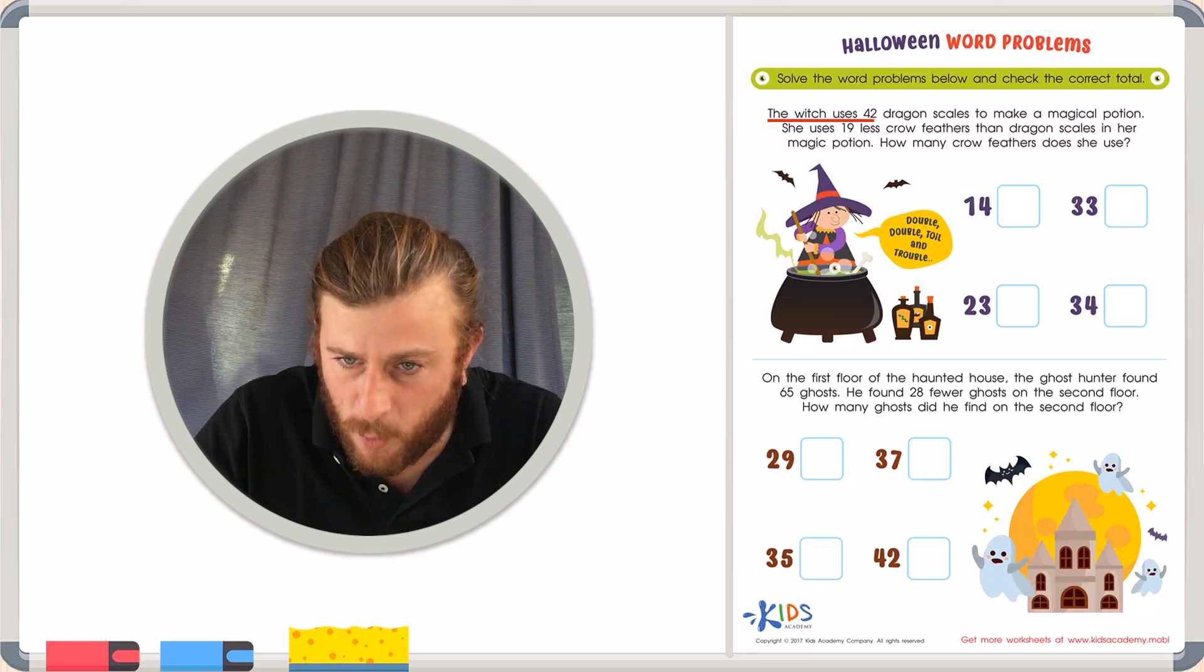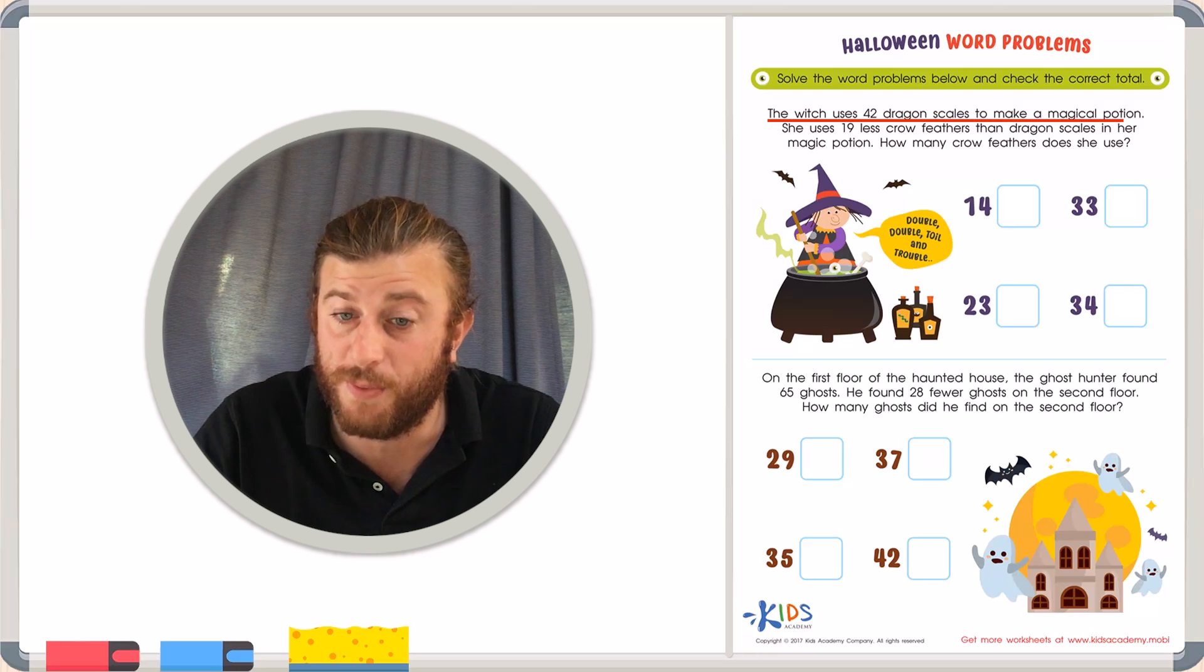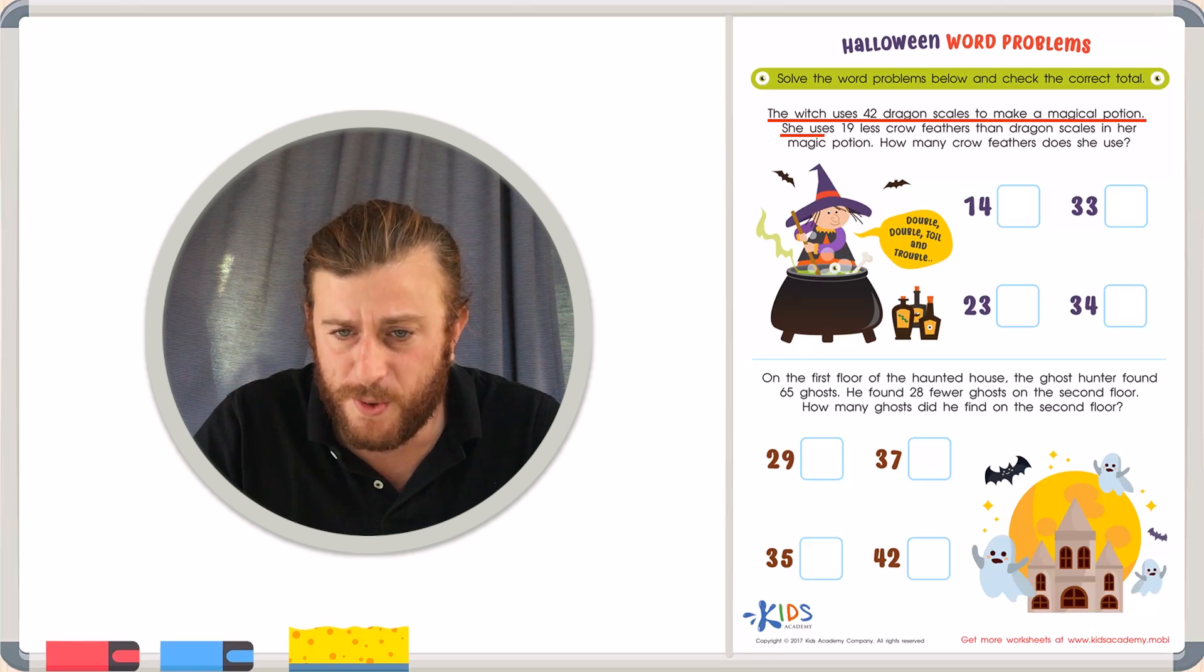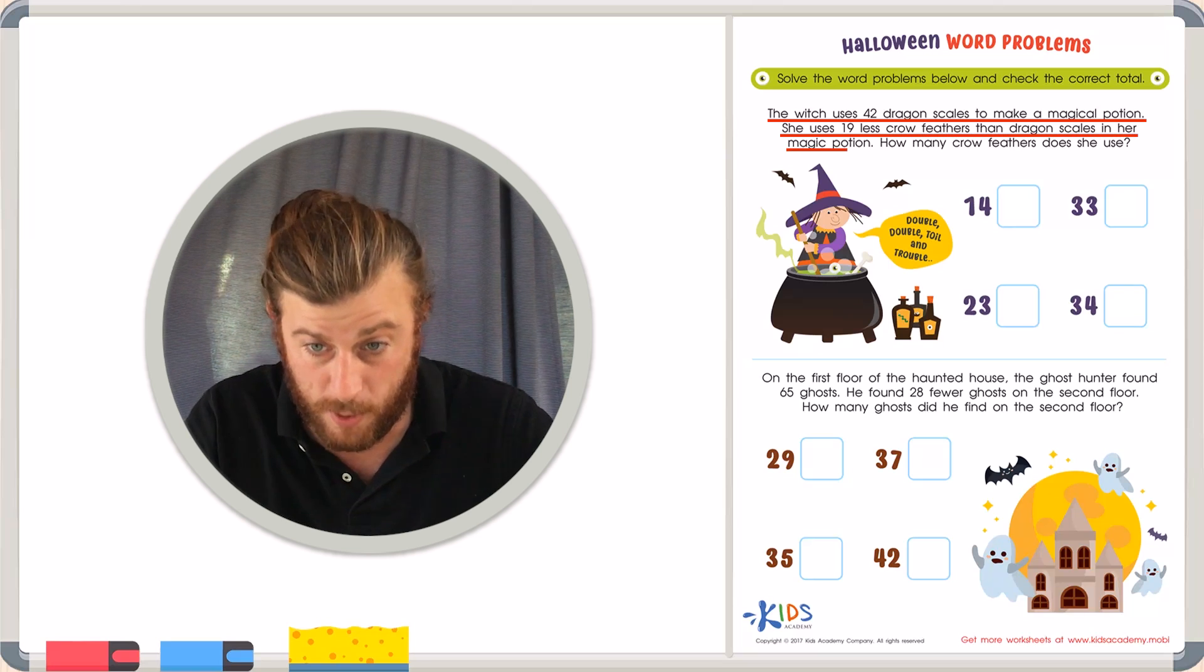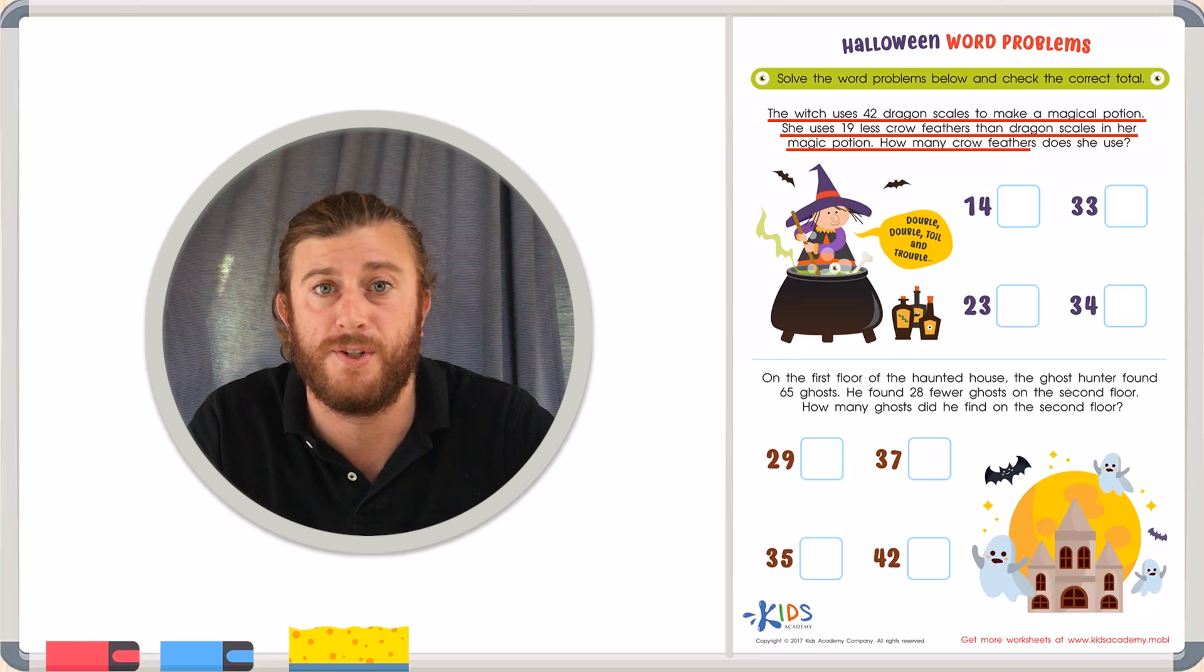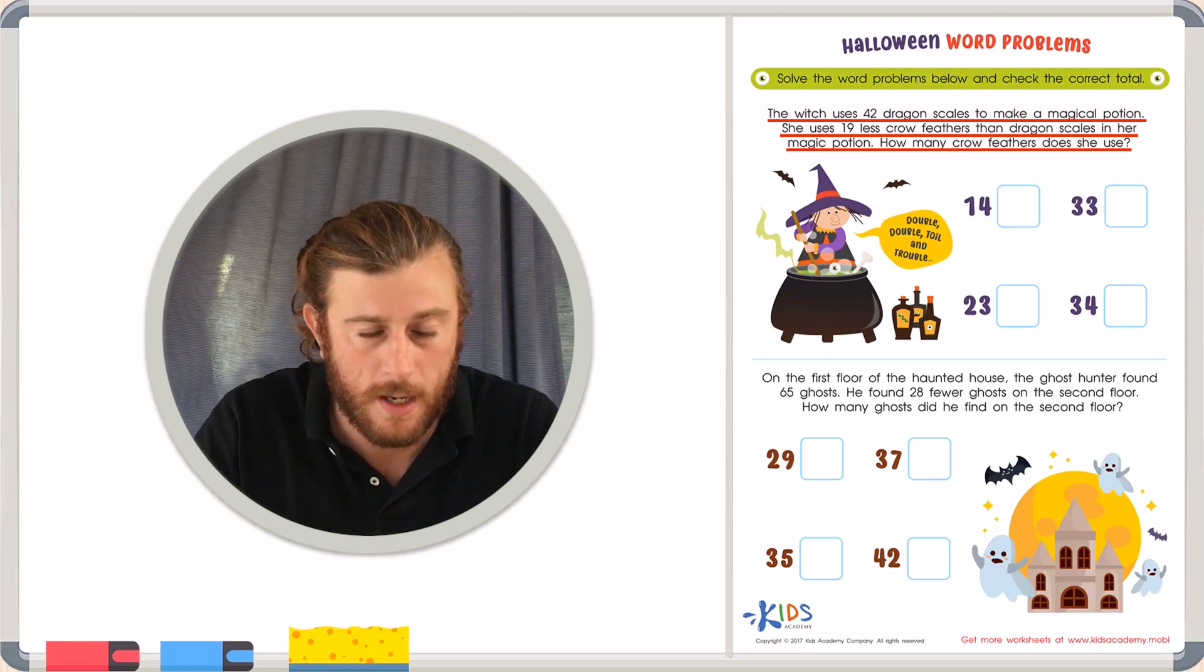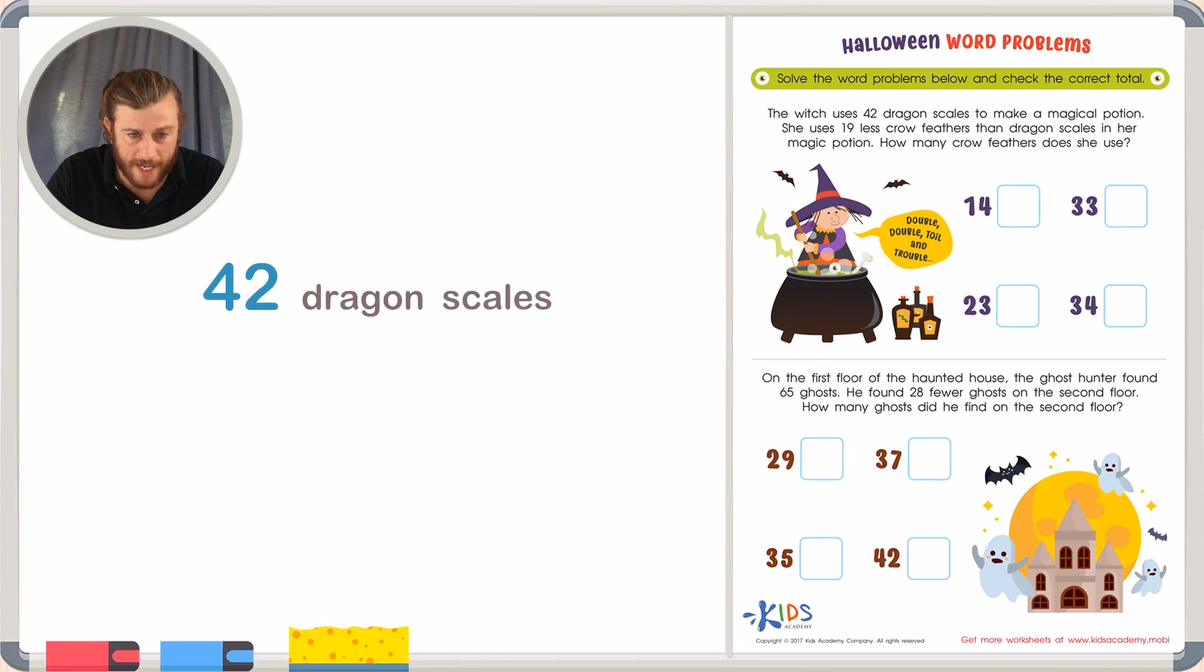The witch uses 42 dragon scales to make a magical potion. She uses 19 less crow feathers than dragon scales in her magic potion. How many crow feathers does she use? So I know she uses 42 dragon scales. We're just going to call them scales. And she also uses 19 less feathers.